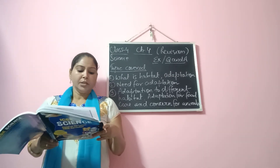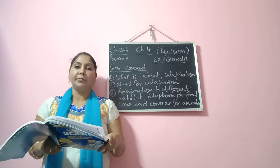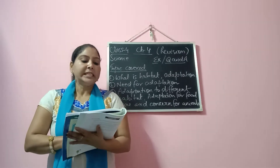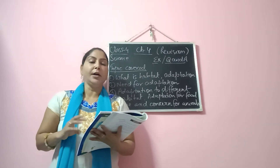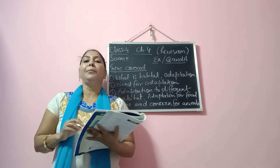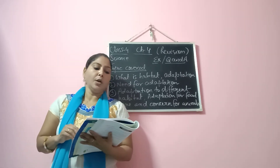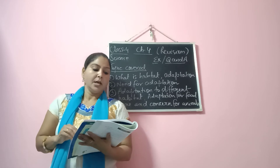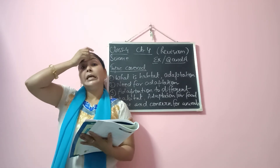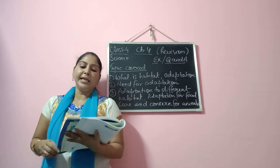Question 4: Squirrel is an example of — the options are: arboreal animal, aerial animal. The answer is arboreal animal, because they live on trees. Question 5: What is another name for summer sleep? The options are: hibernation, adaptation, aestivation. The answer will be aestivation. Question 6: What is the role of sharp spines of porcupines? The answer is to protect from enemies.